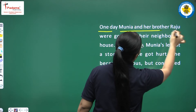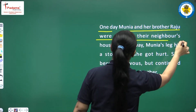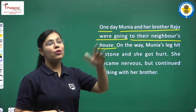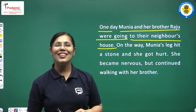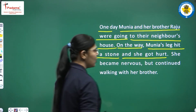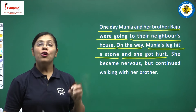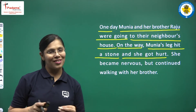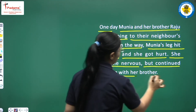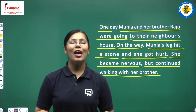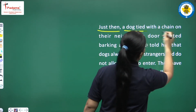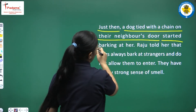One day, Muniya and her brother Raju were going to their neighbor's house. On the way, Muniya's leg hit a stone and she got hurt. She became nervous but continued walking with her brother Raju.